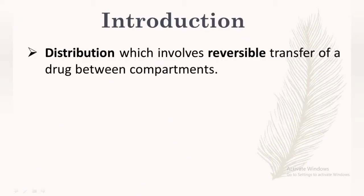Drug reaching the bloodstream or systemic circulation from the site of absorption is not sufficient to show the action of the drug in the body. The drug present in blood should reach all tissues and cells in order to show its pharmacological activity. So drug distribution is important. Drug distribution is the reversible transfer of drug between compartments, that is from blood plasma to other tissues.